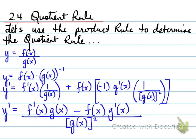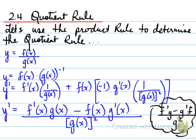This one's important in terms of order because we have a subtraction, so the proper order matters. To take the derivative of a quotient: it is the first derivative times the second minus the second derivative times the first, all divided by the second function all squared. We remember it as: f prime g minus g prime f, all over g squared. That is the quotient rule.